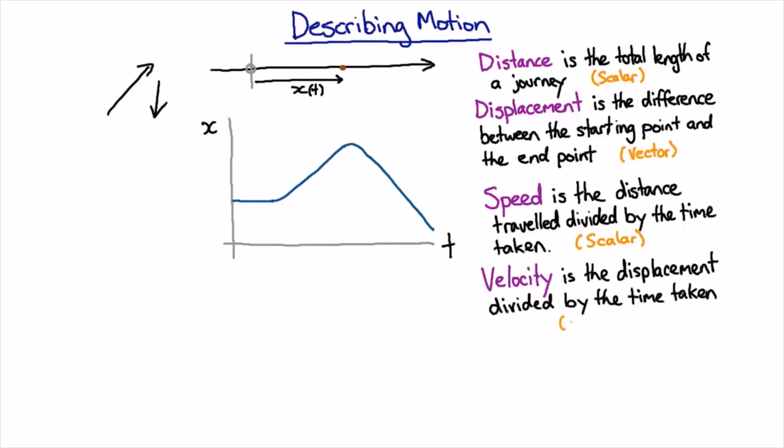So velocity is a vector, because it's got a direction. If you travel backwards, then you have a negative velocity. The velocity here would be zero. The velocity here would be positive, because x is getting bigger over time. And the velocity here would be negative, because x is getting smaller over time.